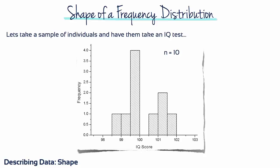The shape of a distribution provides distinctive information. Let's take a sample of 10 individuals, have them take an IQ test and graph the data with a histogram. Look at the overall shape. Most scores are close to 100 with a few people scoring below or above this.